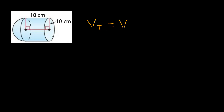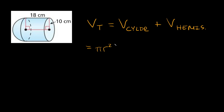Let's try one more. This time we have a cylinder laying on its side with a hemisphere attached at one end. To find the total volume of this solid, the total volume equals the volume of the cylinder plus the volume of the hemisphere. The formula for the volume of a cylinder is pi r squared h, and the hemisphere is one-half the sphere, written as two-thirds times pi r cubed.